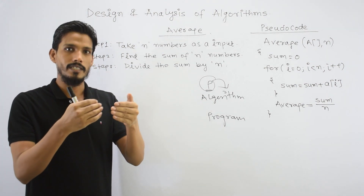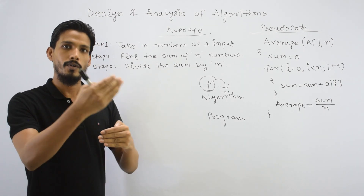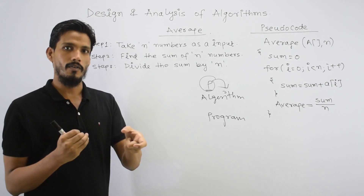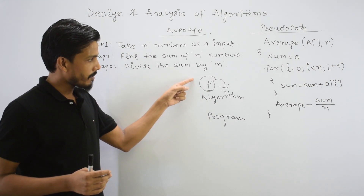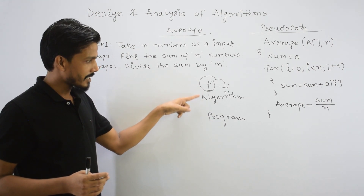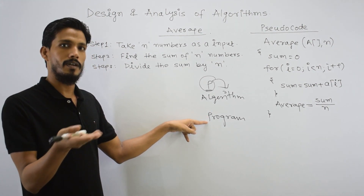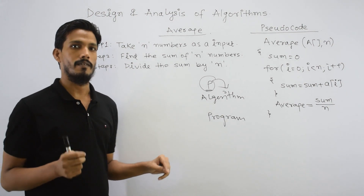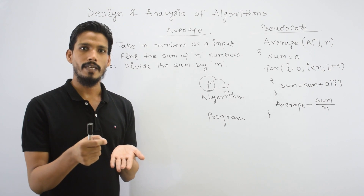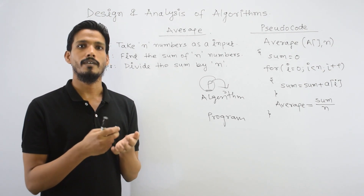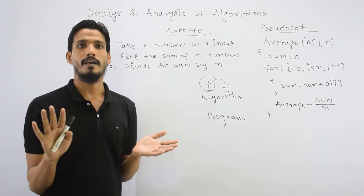The solution of a problem is a step-by-step procedure, because the definition of algorithm is a step-by-step procedure to solve a problem. Once we have an algorithm, we can convert it into whatever programming language we want. We can write the algorithm on paper or in any software — there is no dependency on any specific programming language.